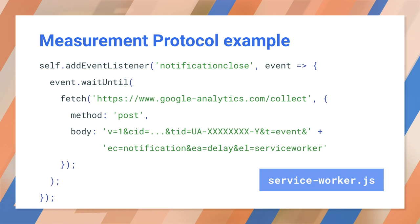Remember that we don't want the service worker to shut down before we complete the POST, so we wrap this code with event.waitUntil. But that raises the question of how we can send events when the app is offline. We can use IndexedDB to store events when users are offline and send them later when back online.